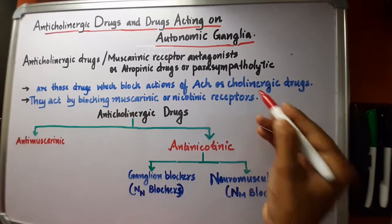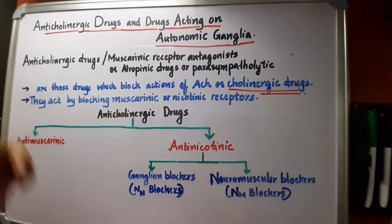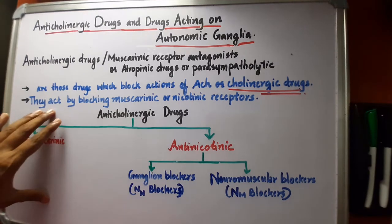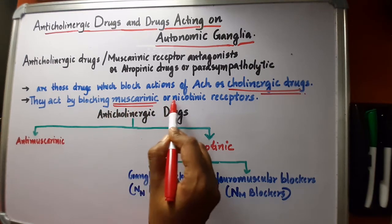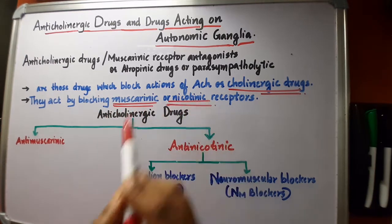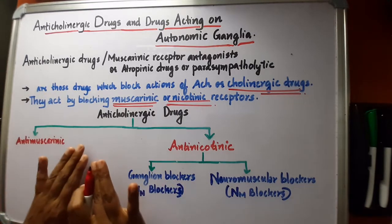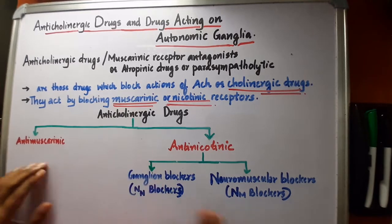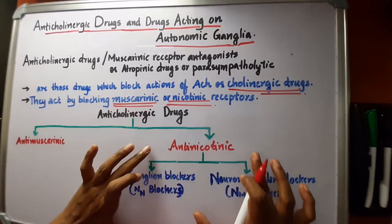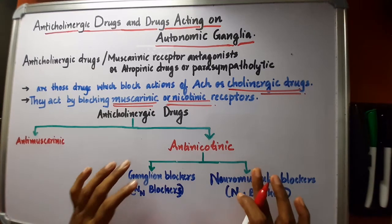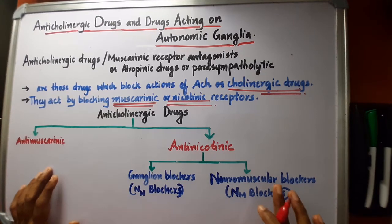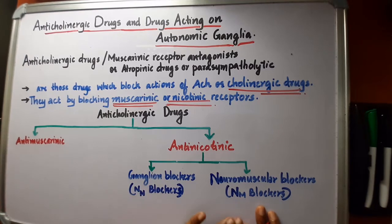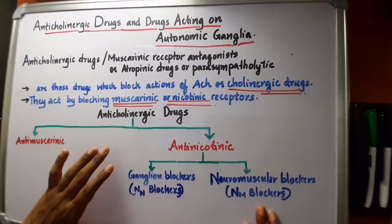Anticholinergic drugs block the action of acetylcholine or cholinergic drugs. They act by blocking the two receptors of cholinergic drugs — muscarinic and nicotinic receptors. For this reason, they can be called anti-muscarinic and anti-nicotinic. The anti-nicotinic ones are classified into ganglion blockers (NN blockers) and neuromuscular blockers (NM blockers). If you haven't watched the cholinergic drugs video, please watch it first.